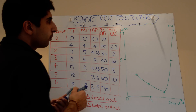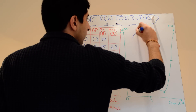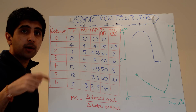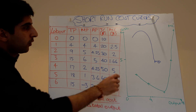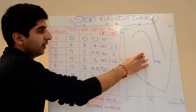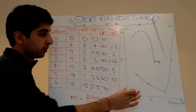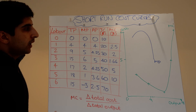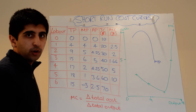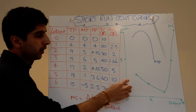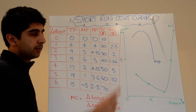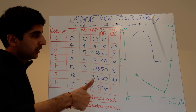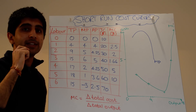Bear in mind our marginal product curve — which I explained in the previous video — looked like an inverted U shape. If you don't understand why it's shaped like that, look at my video on diminishing returns. The marginal cost curve is explained in exactly the same way as the marginal product curve — it comes back to diminishing returns again. In fact, the marginal cost curve is just a mirror reflection of the marginal product curve. It's exactly the same shape, but just reflected, and can be explained through exactly the same reasons.